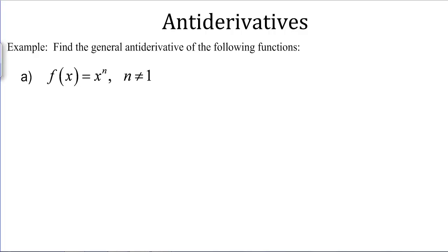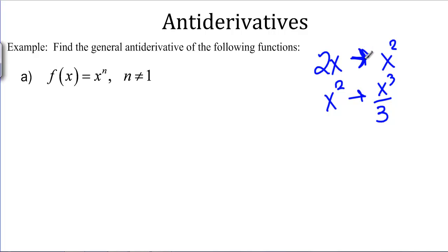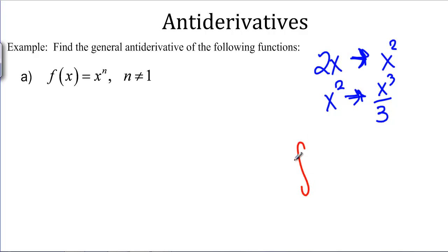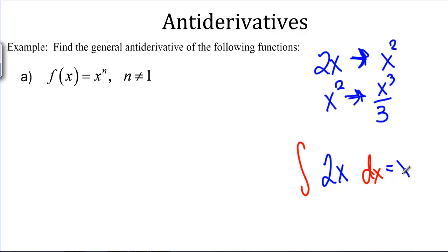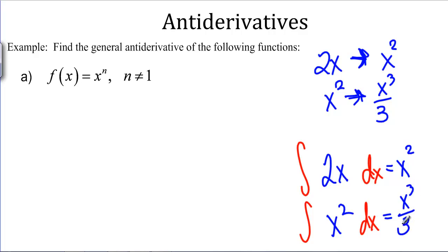We'd like to have some rules for antiderivatives. The antiderivative of 2X is X squared and the antiderivative of X squared is X cubed over 3. Writing antiderivatives has a special notation: you write a squiggly line — it's called an integral sign — and then leave a space, then put a DX at the end. All this together is the notation that means antiderivative. If you put the function in the middle, both results are plus C, because there could be a constant whose derivative is 0.